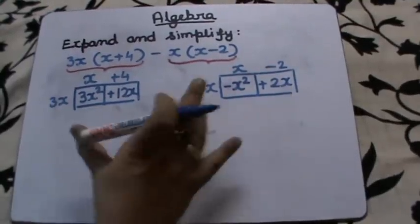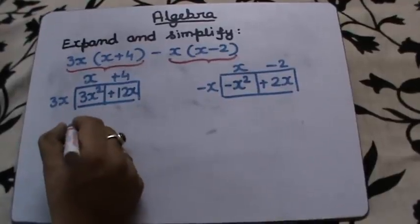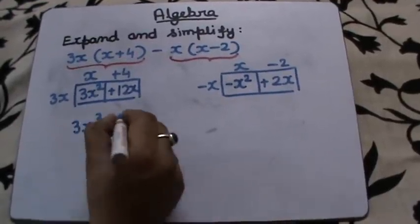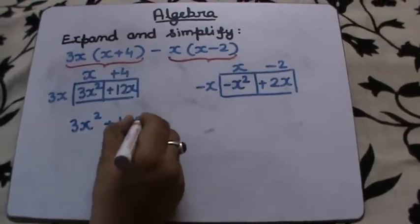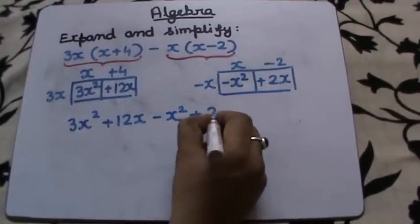Now I am going to write all the terms together and I will combine the like terms. So I have now 3x² + 12x - x² + 2x.